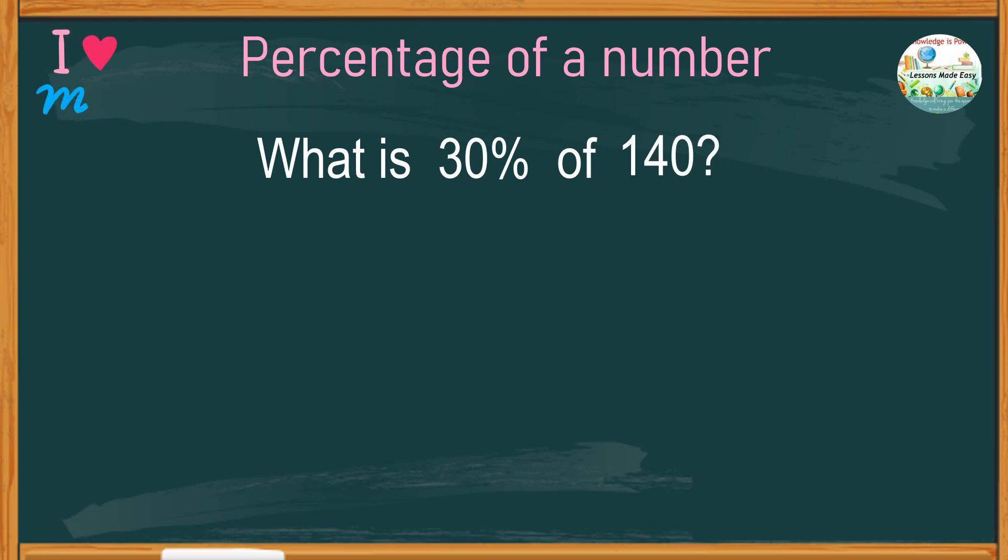There are two ways you can find the percentage of a number. You can either change the percent into a fraction or into a decimal. If you're doing it manually, changing percent into a fraction is the easiest method. In our previous video, we learned that percent is a special fraction where the denominator is always 100.